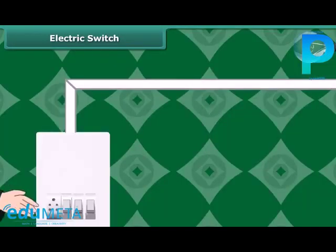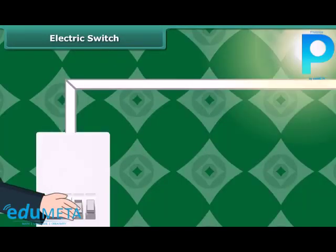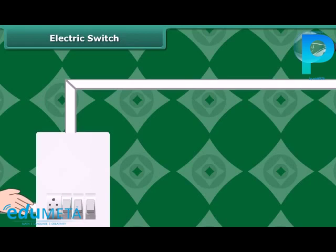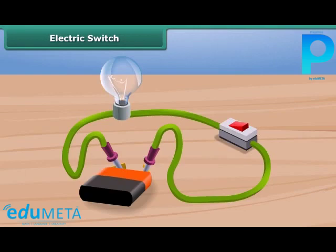A switch for a bulb is pressed down to complete a circuit. The bulb glows. To put the bulb off, we press the switch up. This breaks the circuit and the bulb glows no more. The switch is so made that under normal conditions, the circuit remains open.